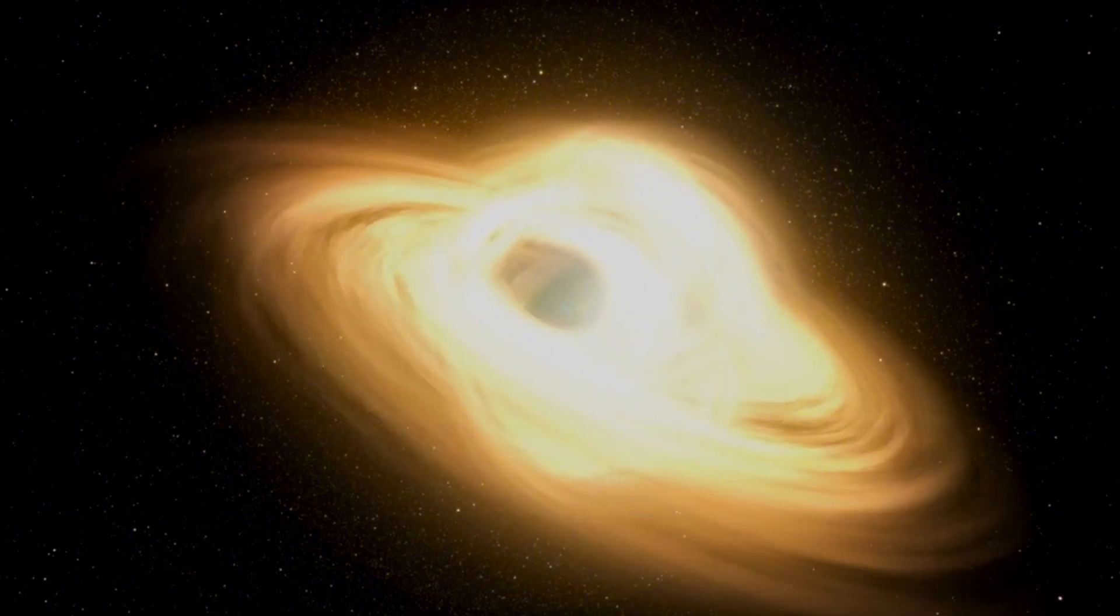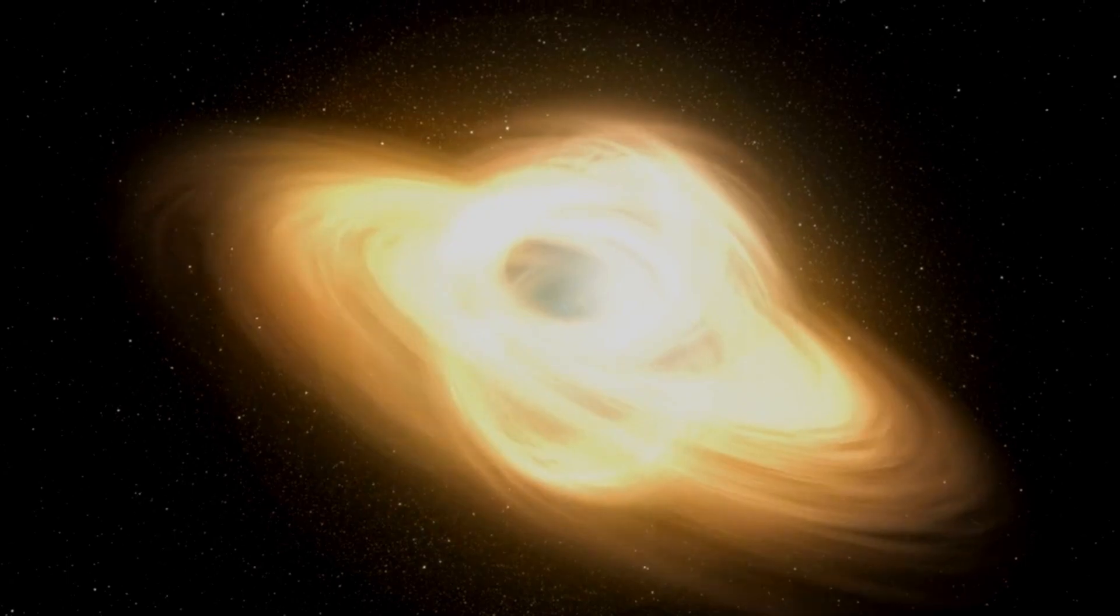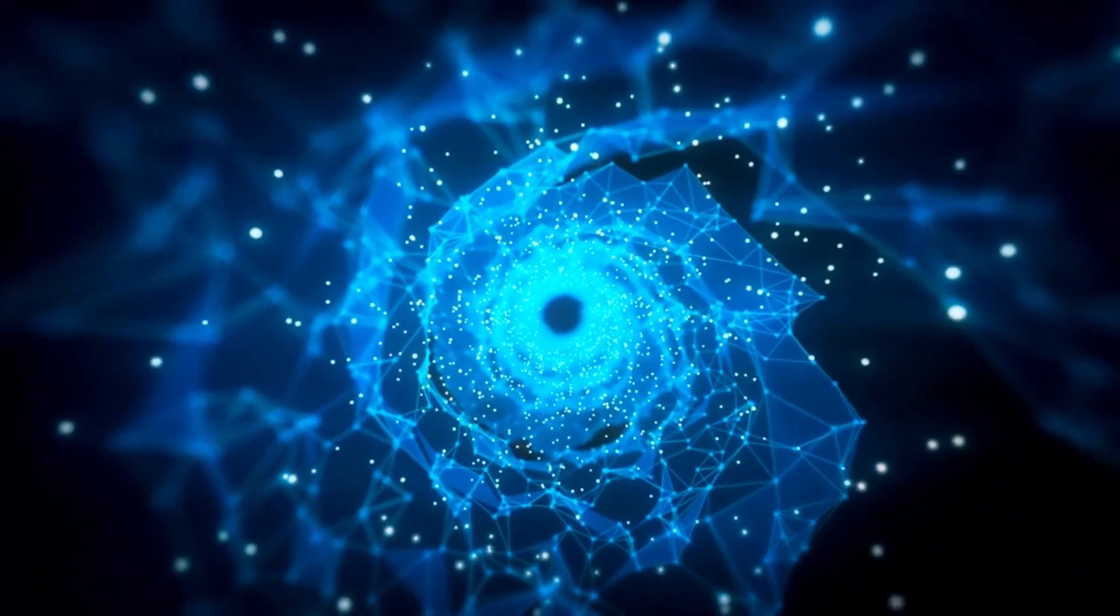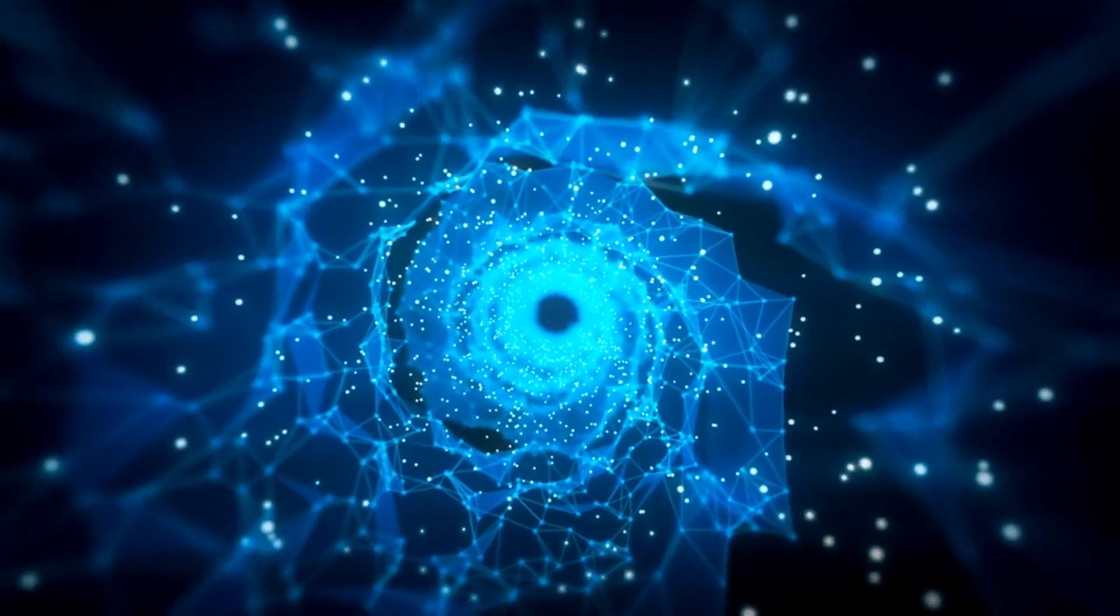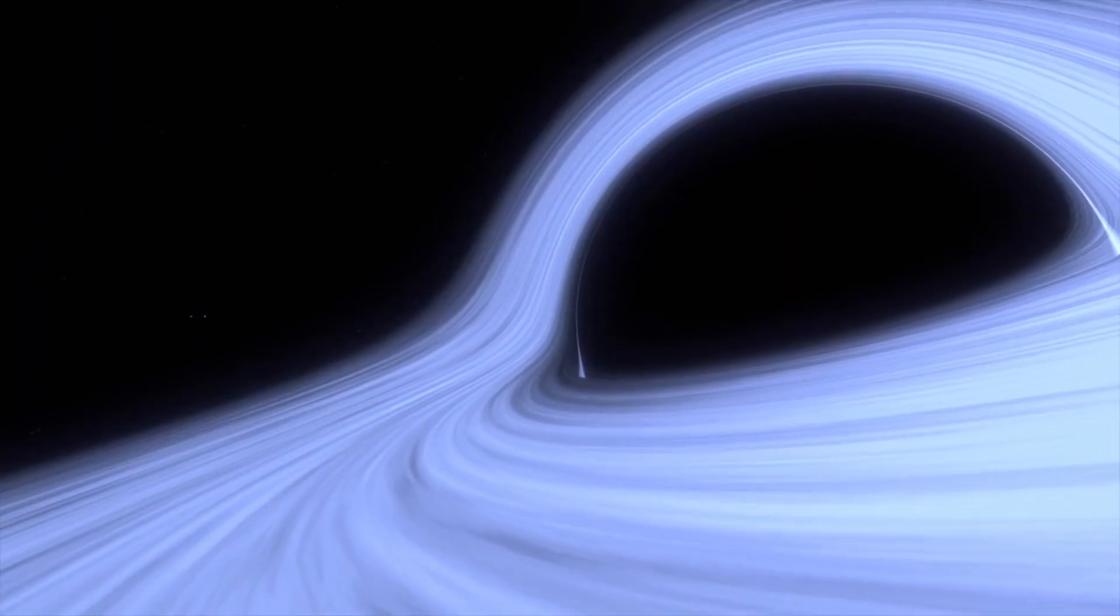Smaller stars, when they die, transform into something called neutron stars, which are super dense but not dense enough to trap light. However, if a star is about three times the mass of our sun, it collapses under its own gravitational pull, forming a black hole.